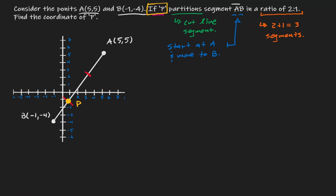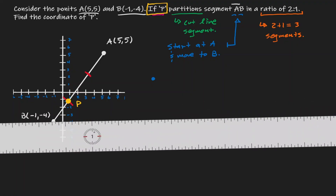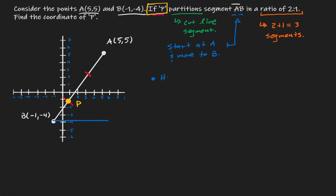Now the question is how do we precisely find the location of point P? Instead of considering this diagonal line, we're going to consider the horizontal and the vertical distance. Let's draw the horizontal distance. Notice that we have an x-value at negative 1 and we want to go all the way to the x-value of 5 — we are traveling 6 units.